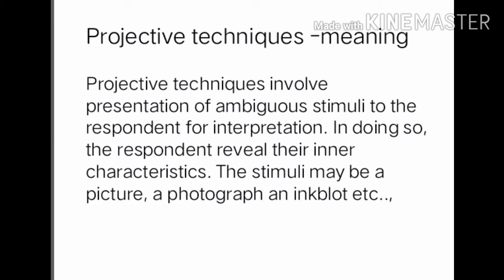An unambiguous stimulus is one that is clear without confusion — that is the opposite of ambiguous. With projective techniques, we use ambiguous stimuli — something that can be interpreted in multiple ways by different respondents.